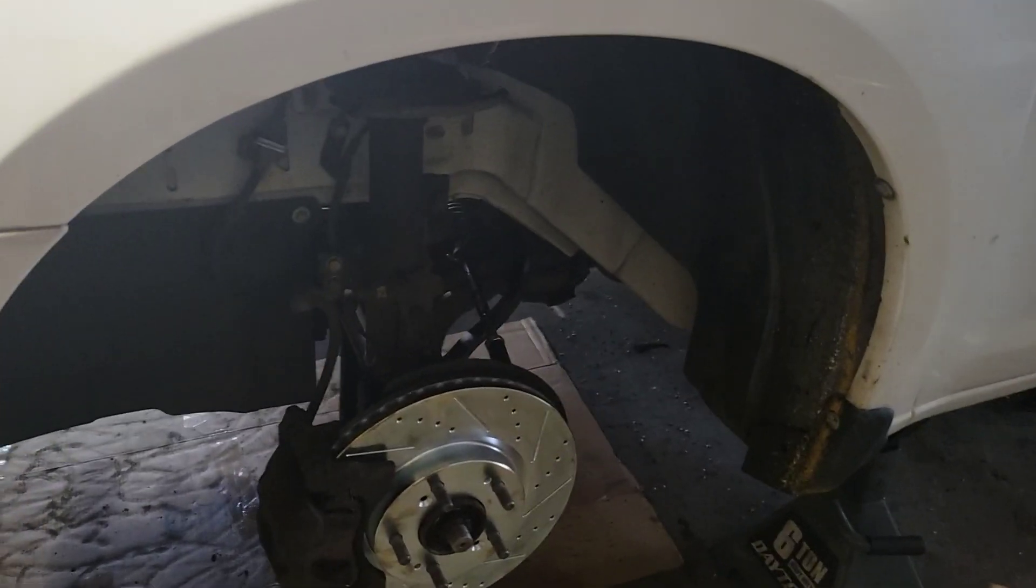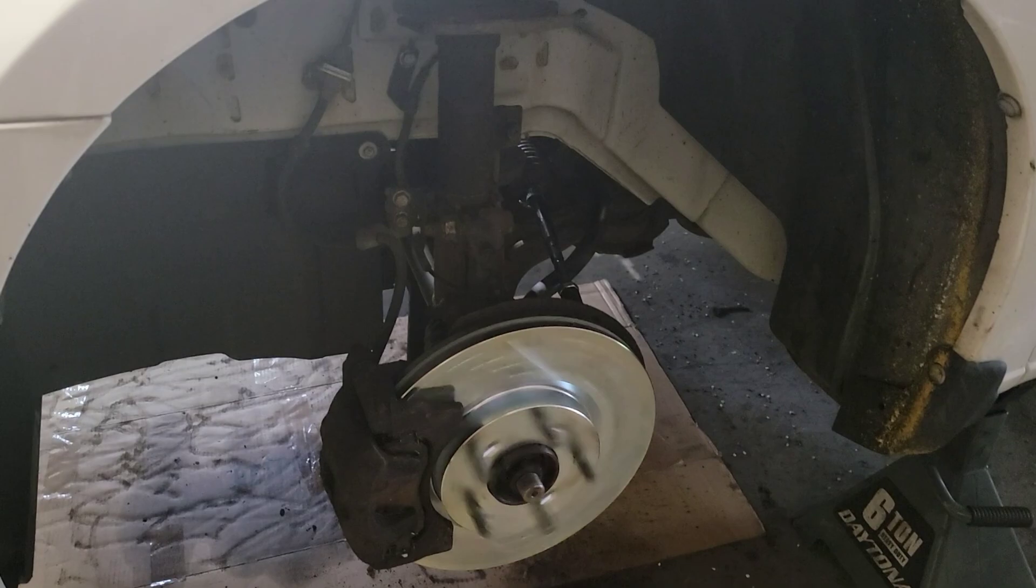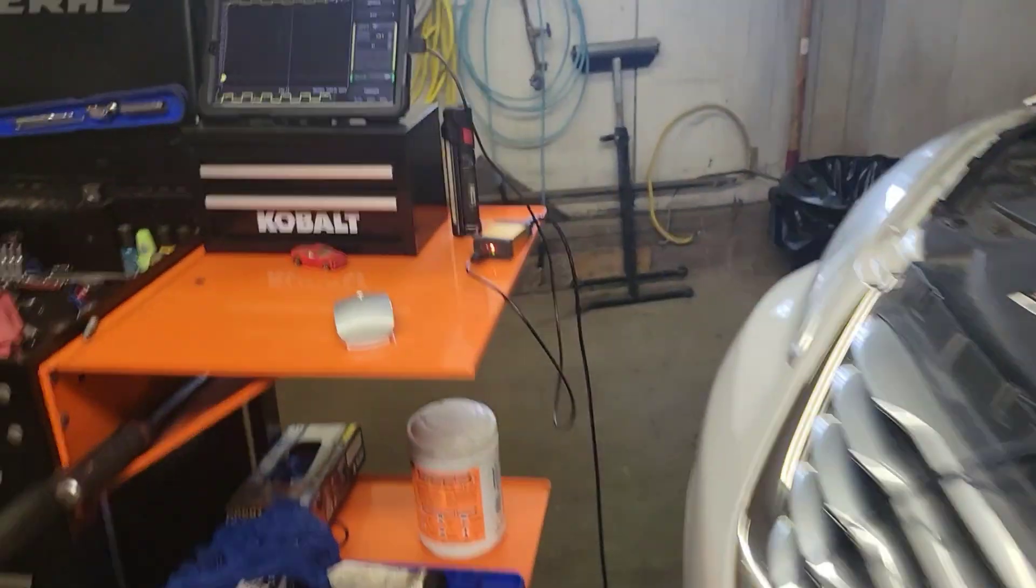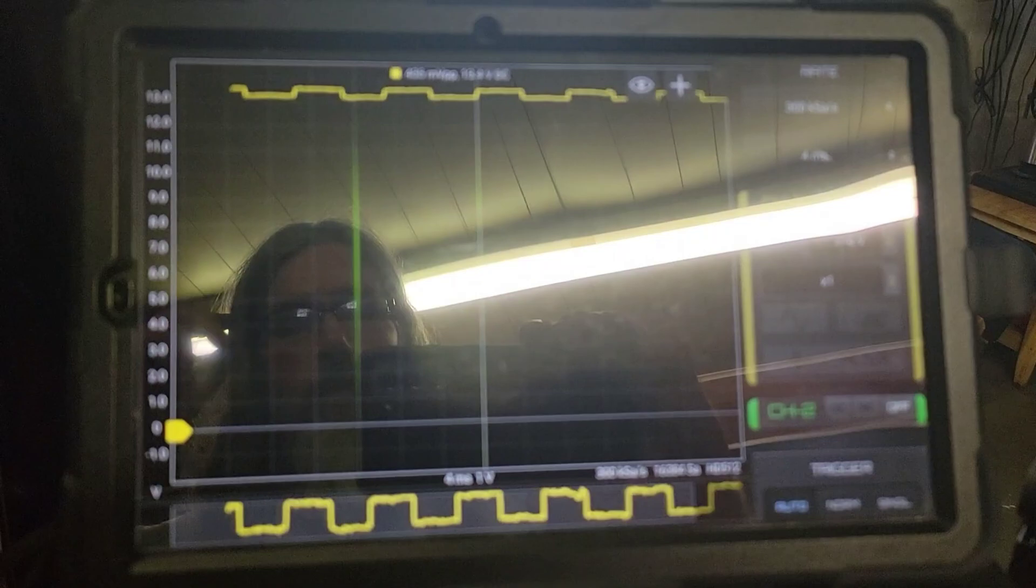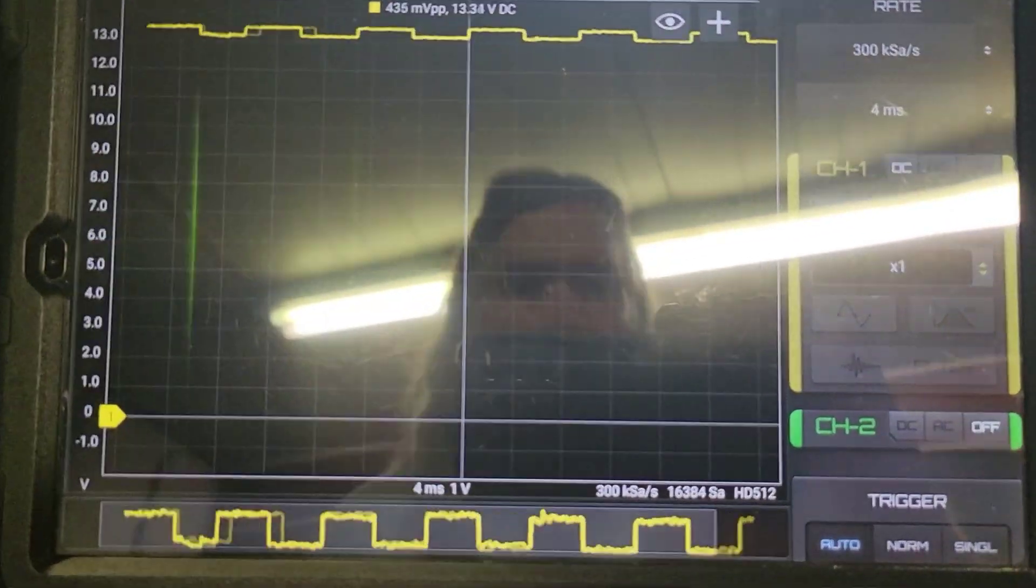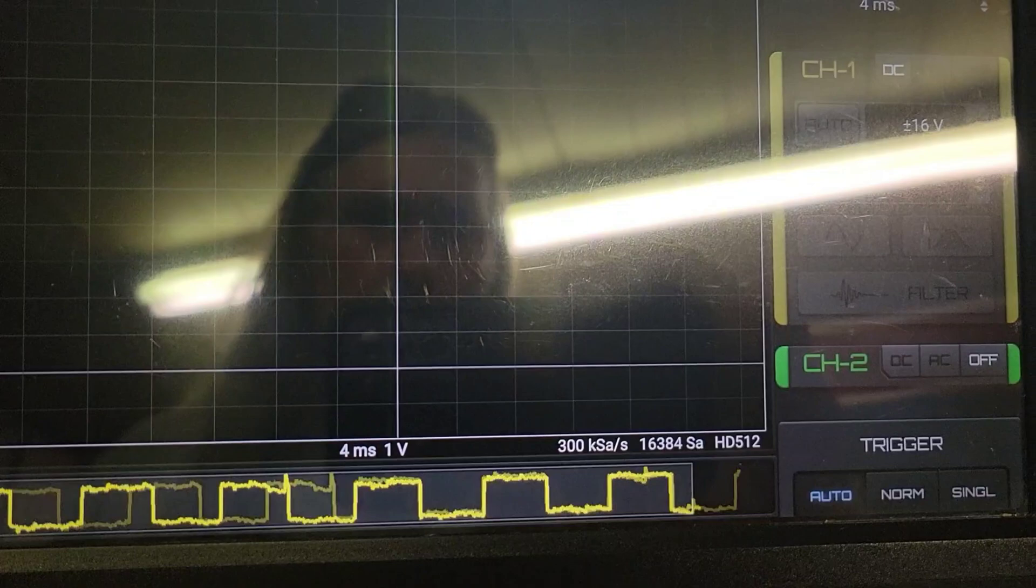All right, guys, I'm going to turn it over to the oscilloscope mode and I'm going to start the car. And then to get rid of the glare, I'm going to just turn back on the screen recorder, get a little bit more clear picture on your guys' end. All right, now the wheel isn't spinning. It's in drive. You can see we are getting square waves.